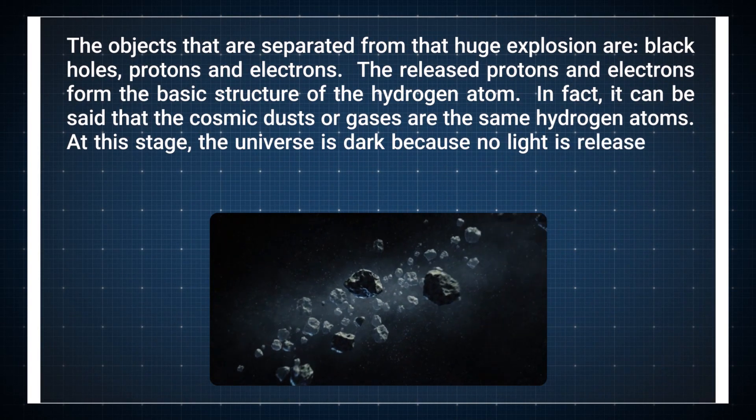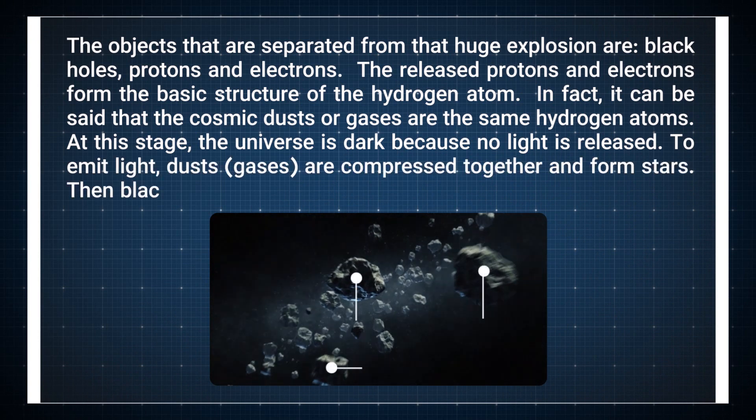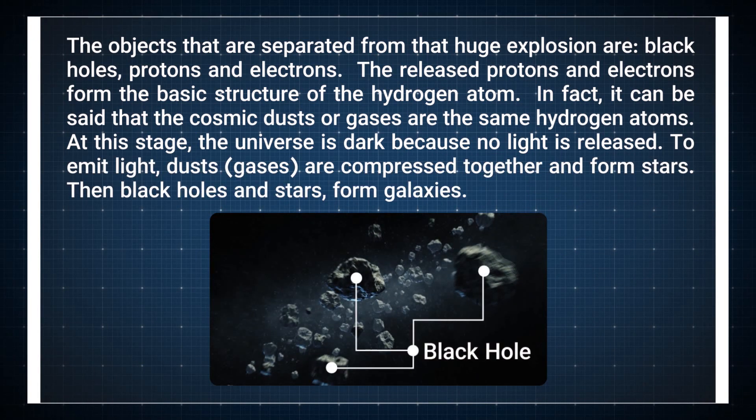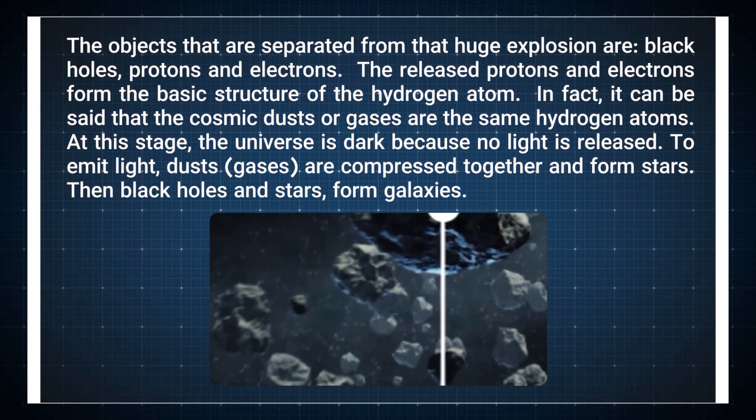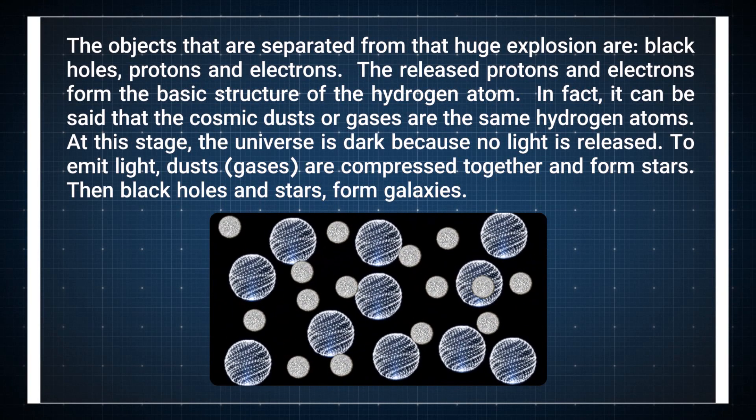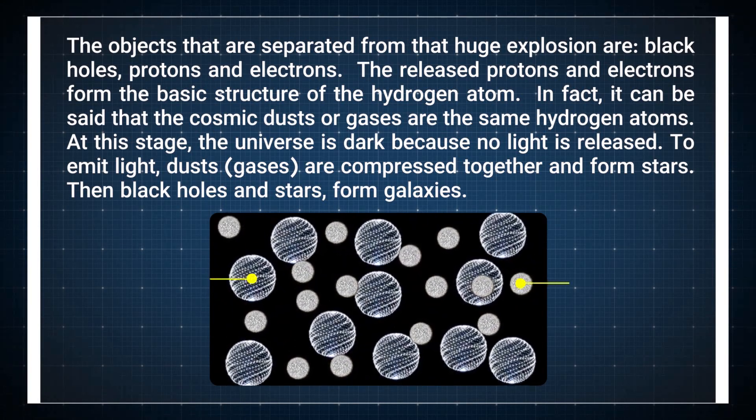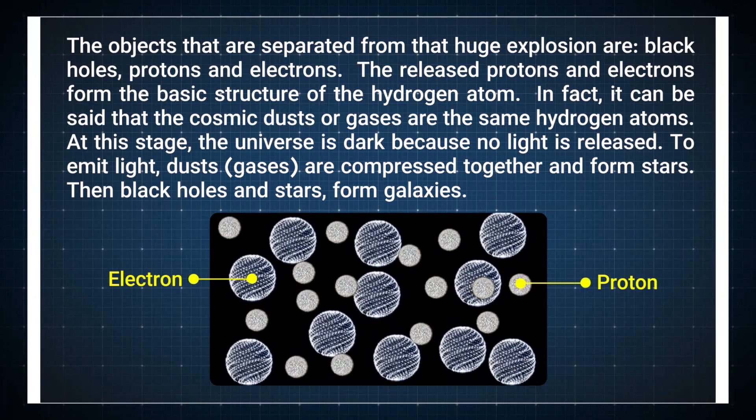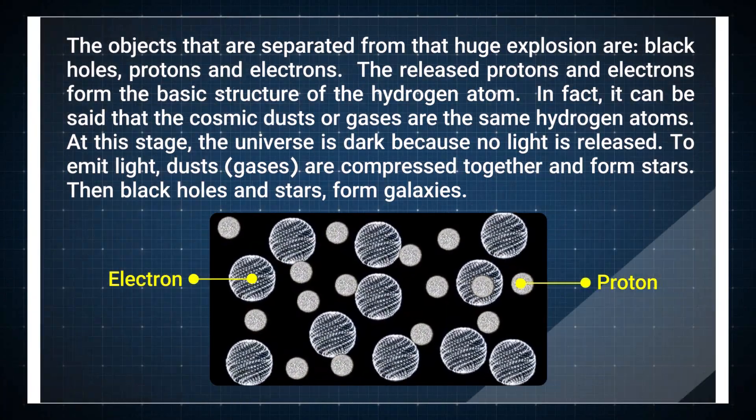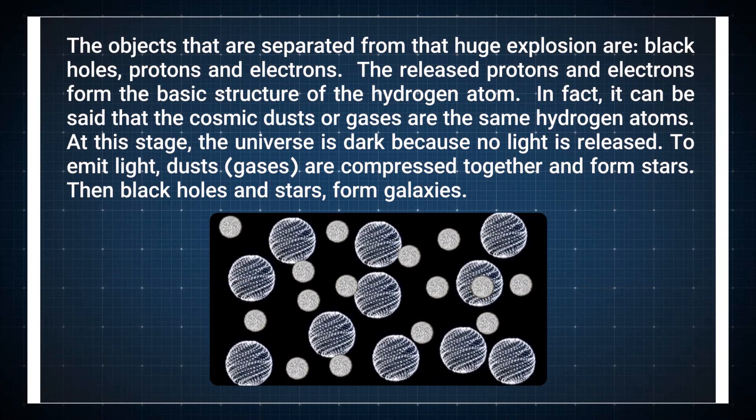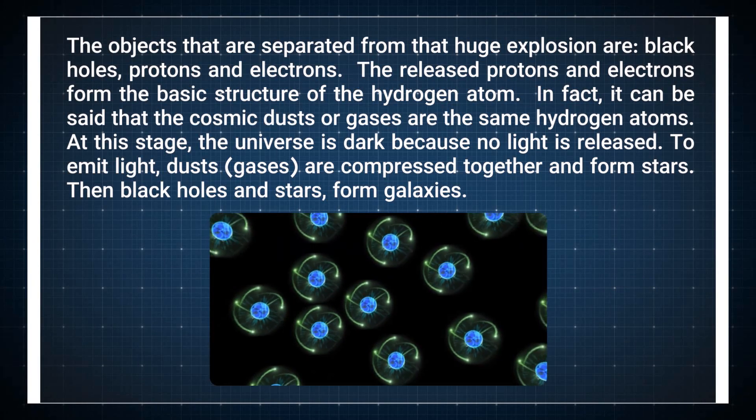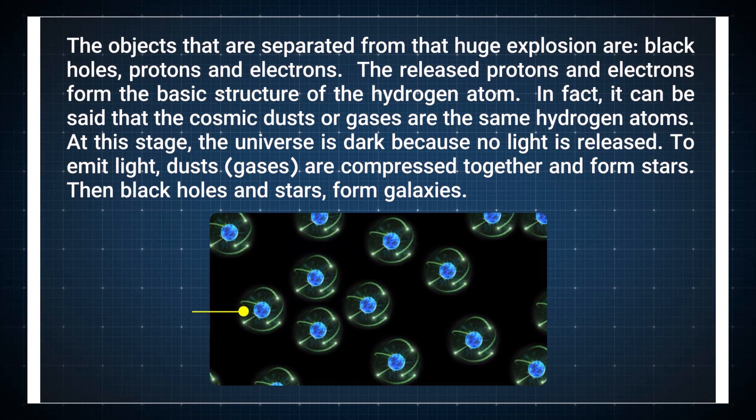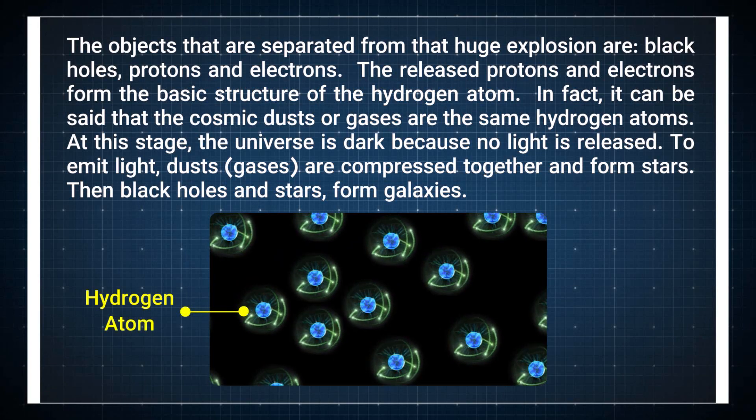The objects that are separated from that huge explosion are black holes, protons and electrons. The released protons and electrons form the basic structure of the hydrogen atom. In fact, it can be said that the cosmic dusts or gases are the same hydrogen atoms. At this stage, the universe is dark because no light is released.